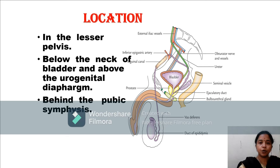The prostate gland is located below the neck of the urinary bladder, above the urogenital diaphragm, in the lesser pelvis, and behind the pubic symphysis.